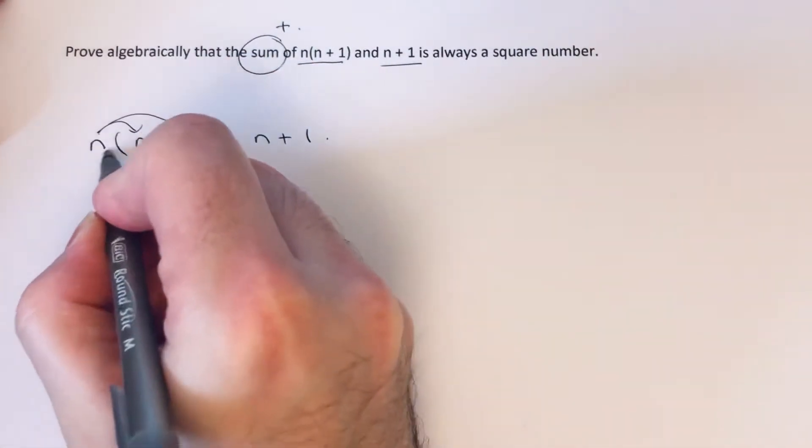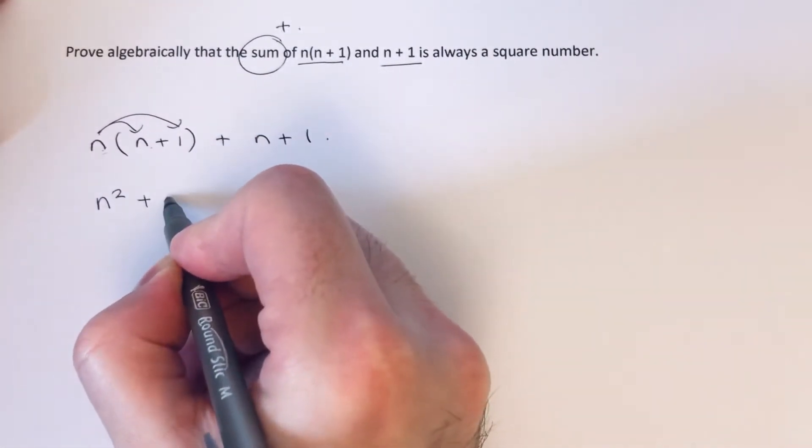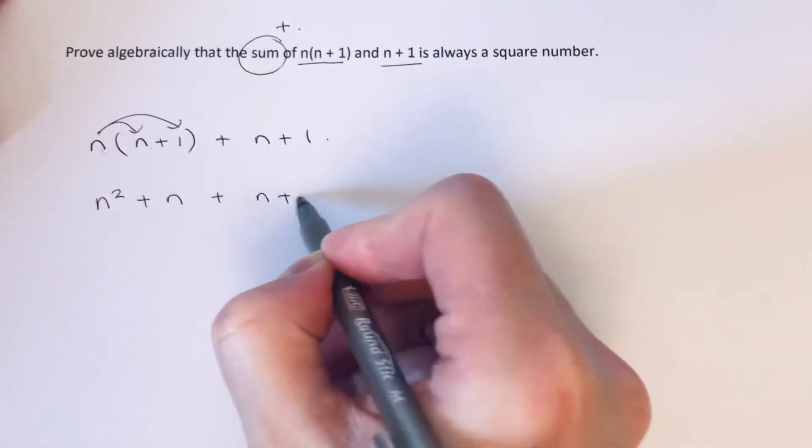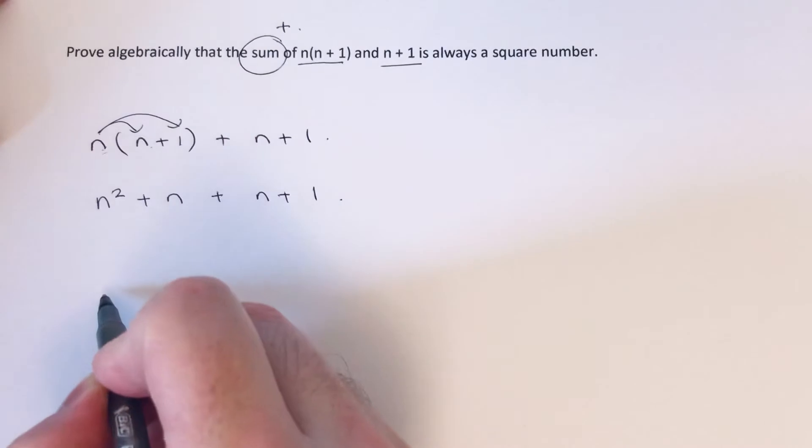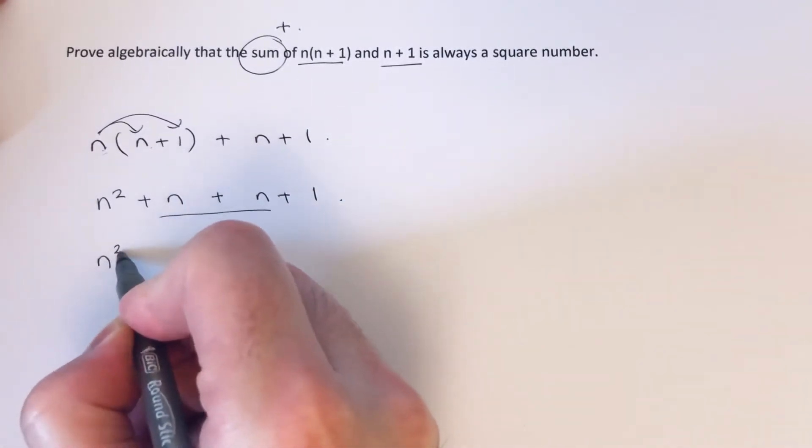So n times n is n squared, n times 1 is 1n which we can just write as n, and then we're going to add n and then add 1. So we can now simplify this and get n squared plus 2n plus 1.